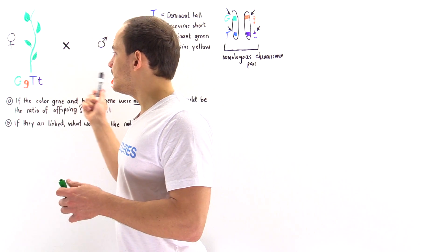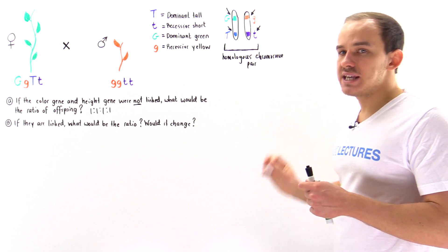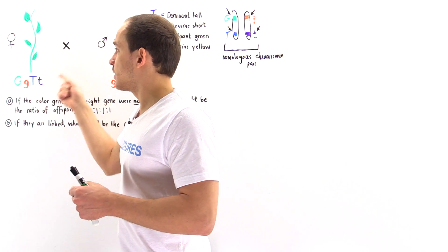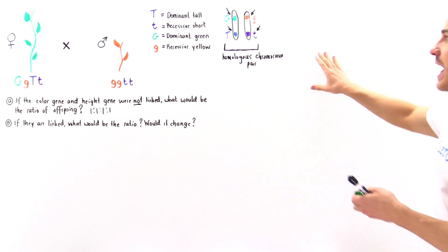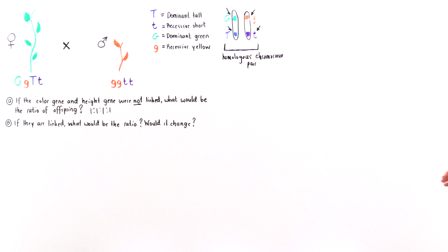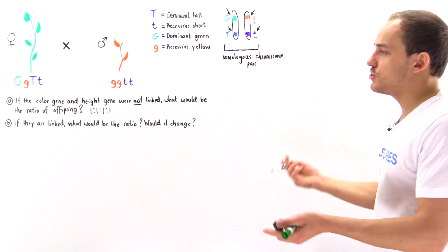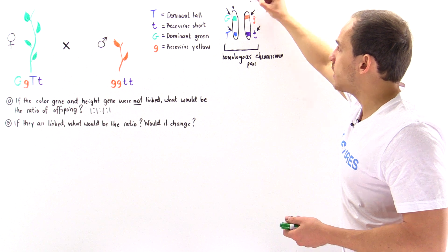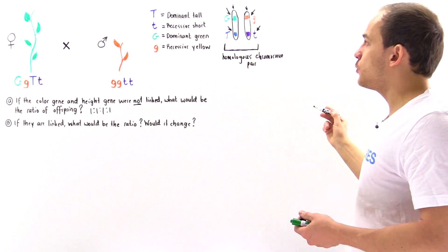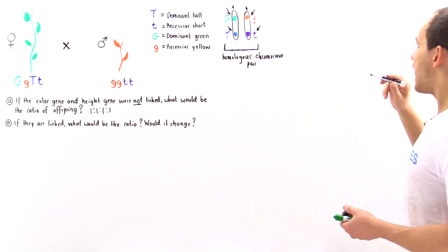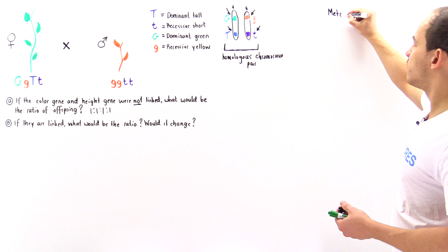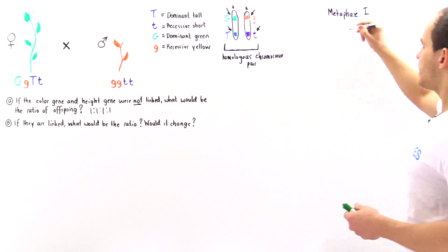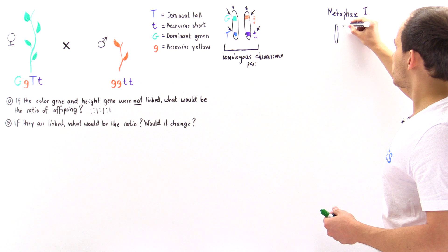Before these individuals mate, they must produce gametes through meiosis. During the S phase before meiosis, each chromosome is replicated, producing four individual chromatids. During metaphase I of meiosis, those tetrad chromosomes align along the equatorial plate.